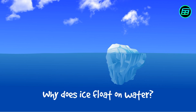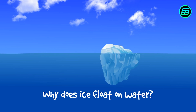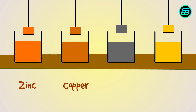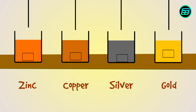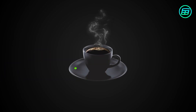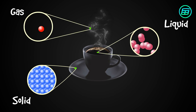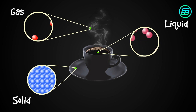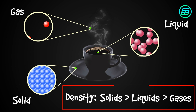Why does ice float on water? When a solid mass of a substance is put on a liquid of the same substance, it generally sinks. The atoms or molecules in a solid are usually closer together than are the atoms or molecules in their liquids. So most solids are denser than their liquid and gas forms.